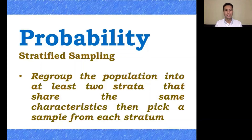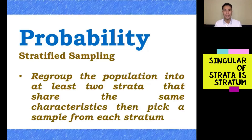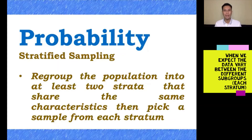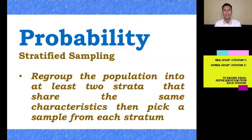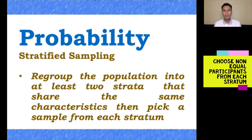Next is stratified sampling. You regroup the population into at least 2 strata that share the same characteristics, then pick a sample from each stratum. It is used when we expect the data gathered from participants to vary between different subgroups, and we want to ensure representation from all subgroups. An example is subdividing the population into women and men groups to ensure equal representation, considering the characteristics of each group. It is also possible to choose non-equal participants from each stratum.